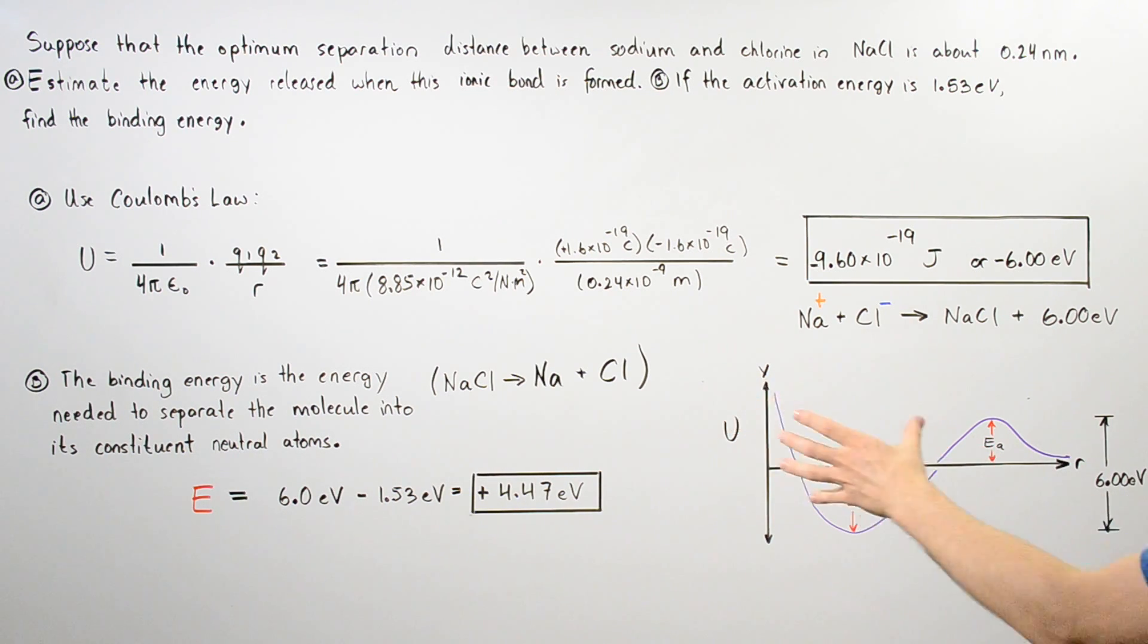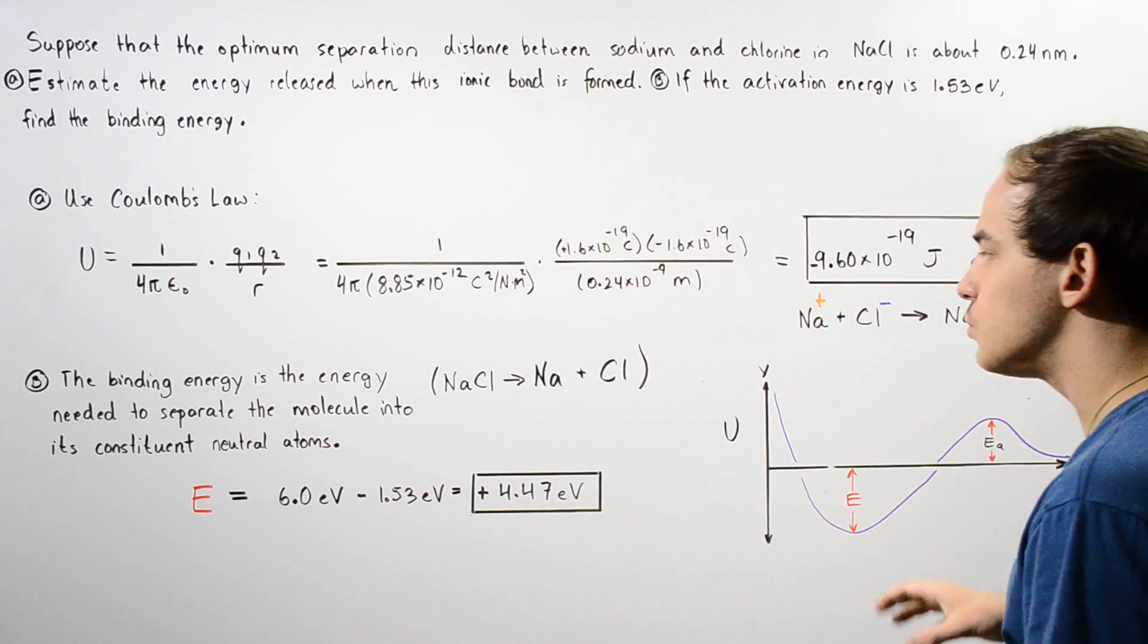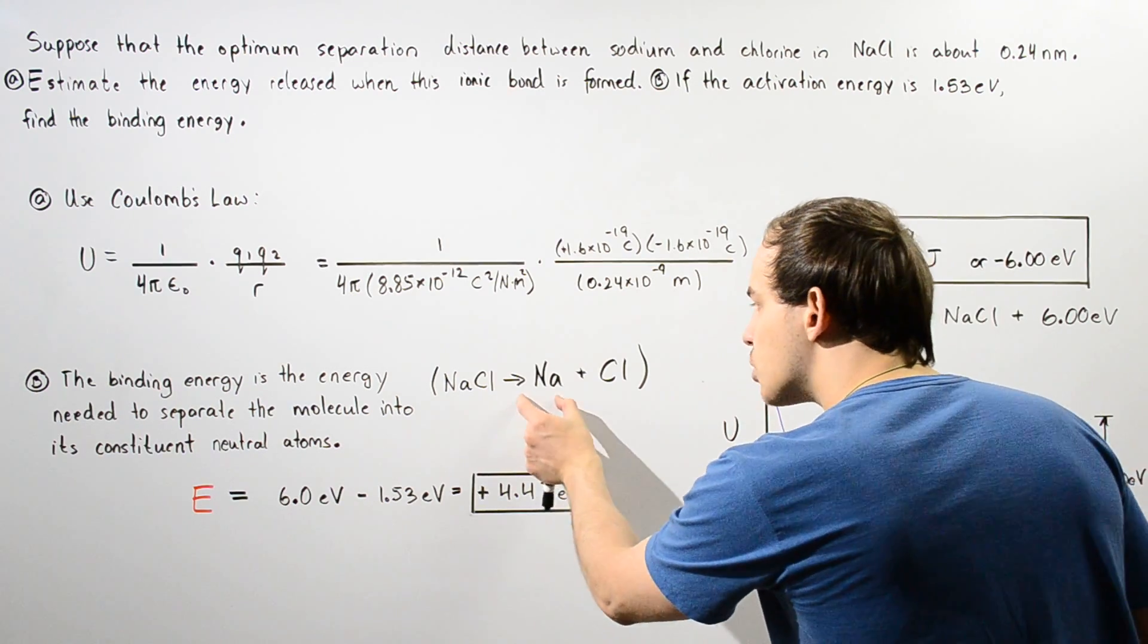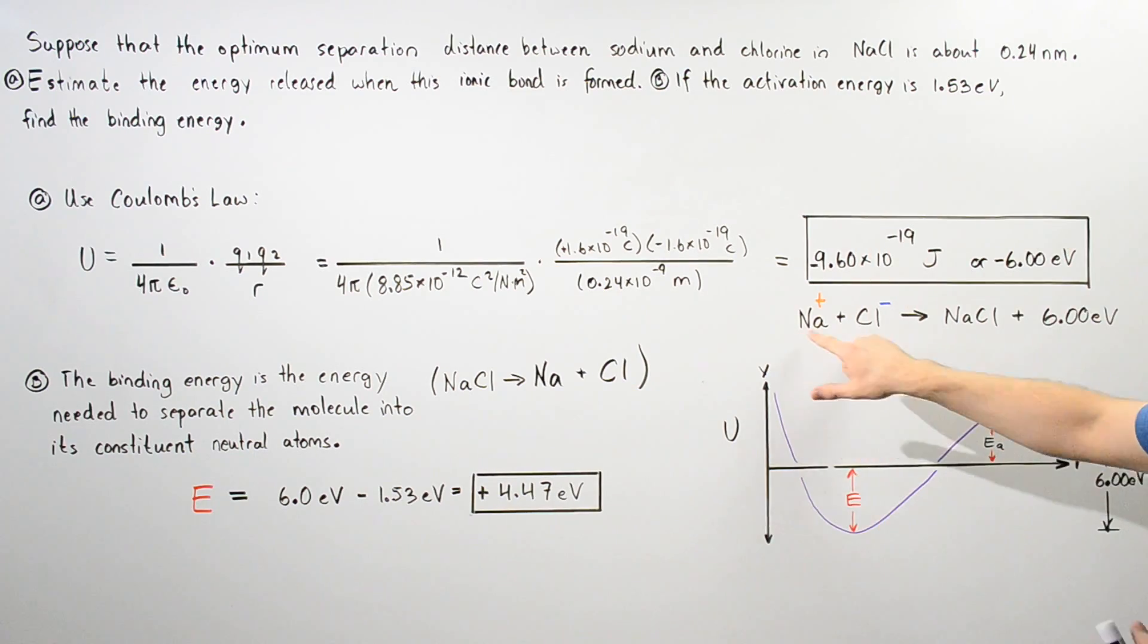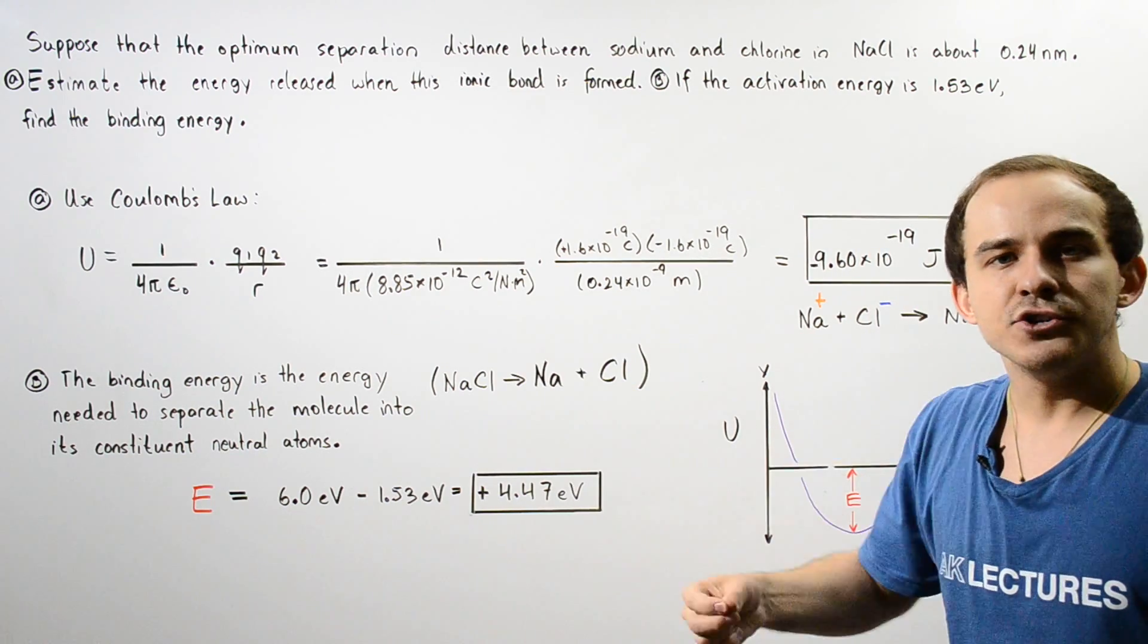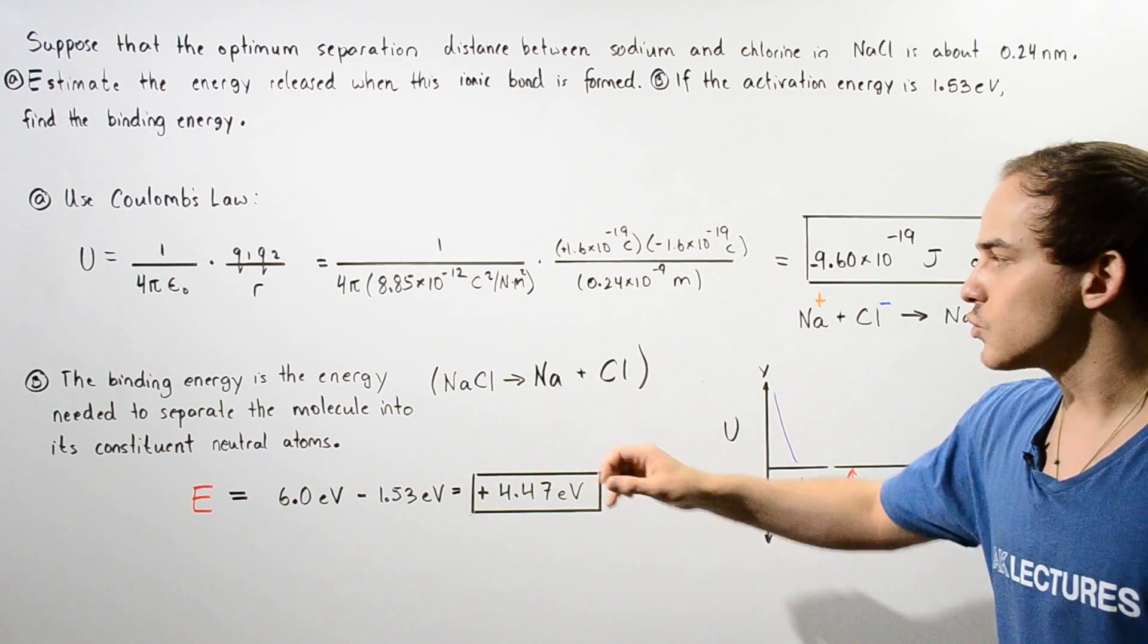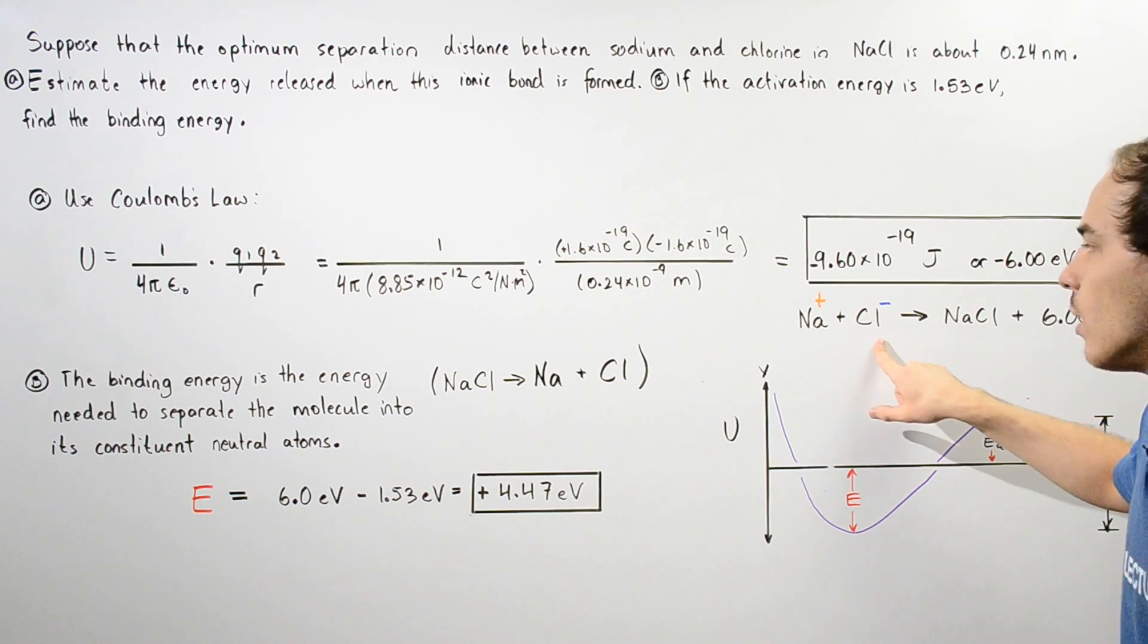If we go all the way to the right, to the right of this bump, this region here corresponds to when our sodium and the chlorine molecules are in their neutral state. To go from our neutral sodium and neutral chlorine to these two ions, energy must be inputted. Work must be done to take our electron away from the sodium and place it onto our chlorine.